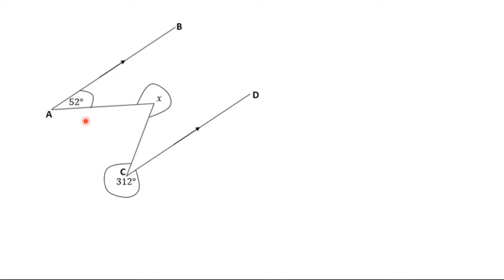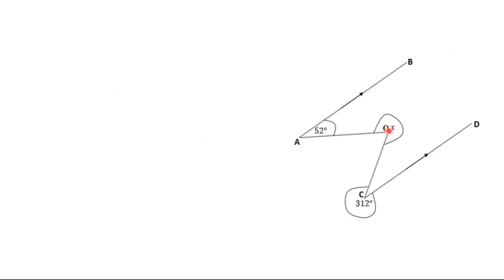Let's consider another question. In this diagram, we are supposed to find X. You can see that X is the outer angle here. It is always easier to first find the inner angle, then subtract it from 360 degrees to get the outer angle, since angles around a point add up to 360 degrees. We call this point O, and we bring a variable P to represent the inner angle.